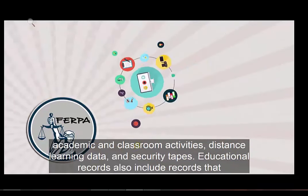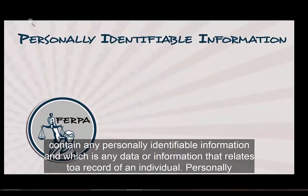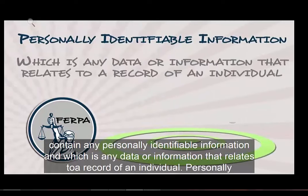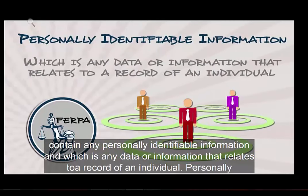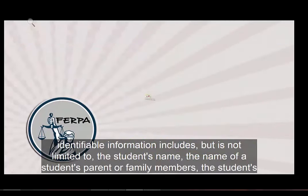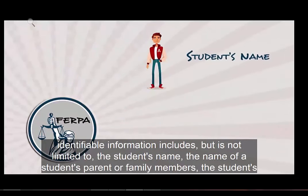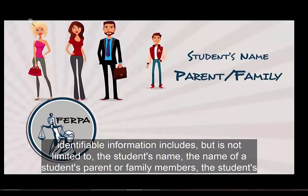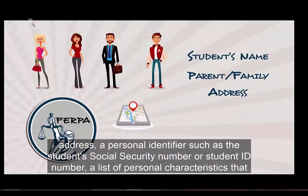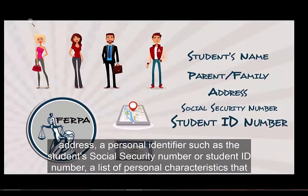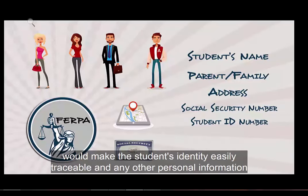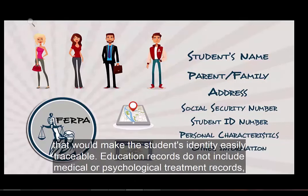Educational records also include records that contain any personally identifiable information, which is any data or information that relates to a record of an individual. Personally identifiable information includes but is not limited to the student's name, the name of the student's parent or family members, the student's address, a personal identifier such as the student's social security number or student ID number, a list of personal characteristics that would make the student's identity easily traceable, and other information that would make the student's identity easily traceable.